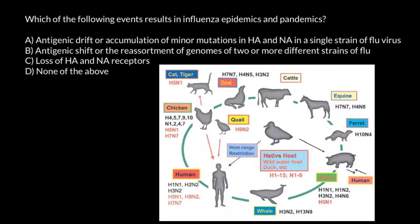Any variant of this virus occurs in wild birds, except a couple of variants unique to bats. You can also see arrows going from birds to humans and pigs, and we need to add that humans can also get this virus from pigs.